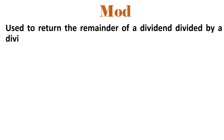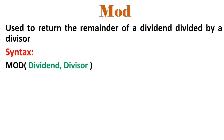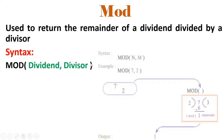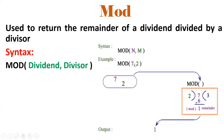Now we'll see one more concept — that is MOD. It is used to return the remainder of a dividend divided by a divisor. The syntax is MOD(dividend, divisor). So MOD(7, 2) — I'm dividing seven by two. Two times three is six, so seven minus six gives remainder one. MOD function gives the remainder of a value. If you know CASE statement and MOD function, our requirement can be easily solved.